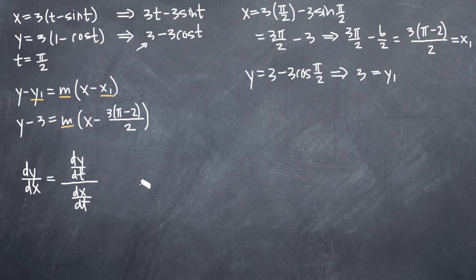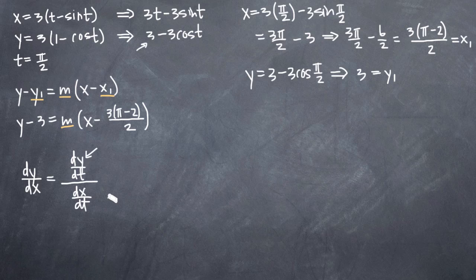So dy over dx equals (dy/dt) divided by (dx/dt). We'll need to calculate the derivative of y with respect to t for the numerator, and the derivative of x with respect to t for the denominator.